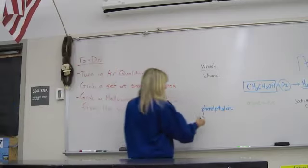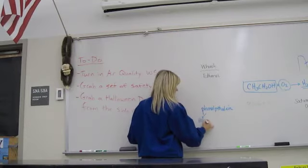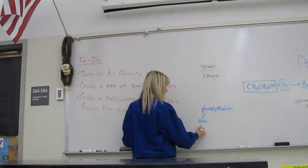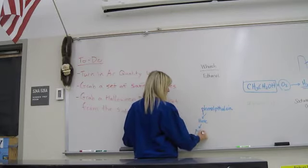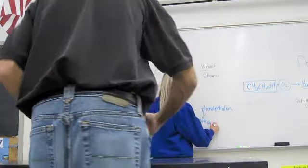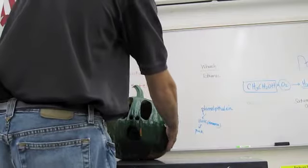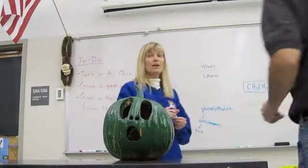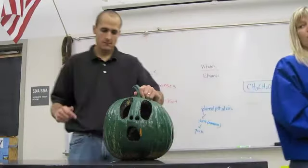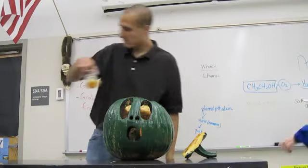In the presence of a base — and we'll be talking about the chemistry behind acids and bases later, and what's the difference — but in the presence of a base, it will turn that bright pink that you saw. So I had my indicator, which was a colorless liquid, and I added it to something called ammonia, which is an extremely strong base. And so what you saw is that pink will change.